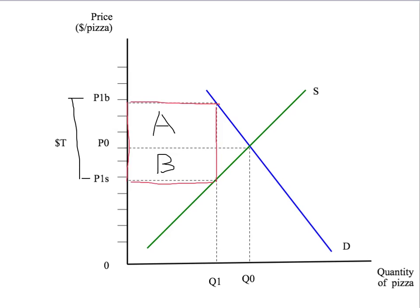Area A is the amount of tax revenue effectively paid by the buyers — it reflects that buyers pay a higher price after the tax. The height of rectangle A is the change in the price to the buyers, and the length Q1 is the amount buyers purchase. Area B is the amount of tax borne by the sellers. Sellers receive a lower price after the tax, and area B is the reduction in the price sellers receive — the height of rectangle B — times the quantity Q1. So B is the tax revenue effectively paid by the sellers.